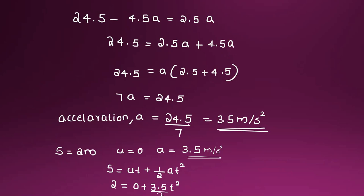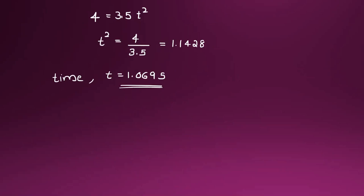The acceleration a equals 24.5 divided by 7, which equals 3.5 meters per second squared. Now, the body starts from rest and travels a distance of 2 meters. Using the kinematic equation s equals ut plus half at squared: 2 equals 0 plus (3.5 divided by 2) times t squared. Then 4 equals 3.5 t squared, so t squared equals 4 by 3.5 equals 1.1428, and therefore time t equals 1.09 seconds.